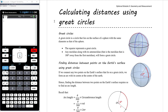What we're going to focus on today is calculating distances using something called great circles. On any sphere, a great circle is a circle that lies on the surface of the sphere so that it has the same diameter as the sphere. For example, if we're imagining the Earth as a sphere, the equator would be a great circle.